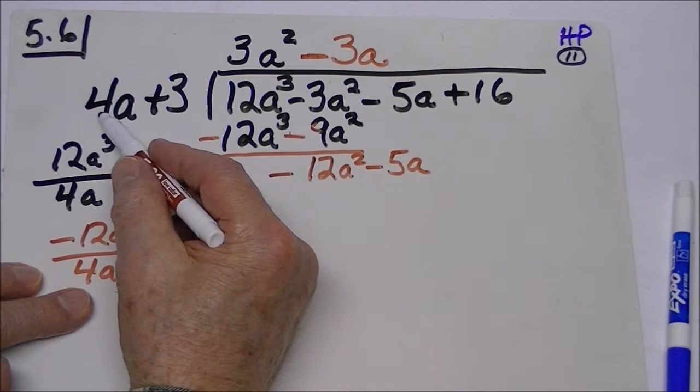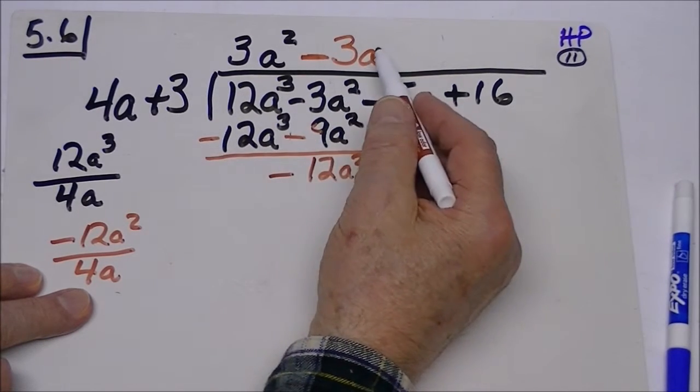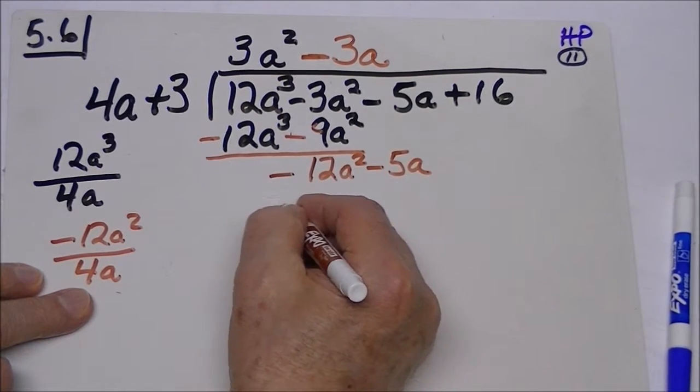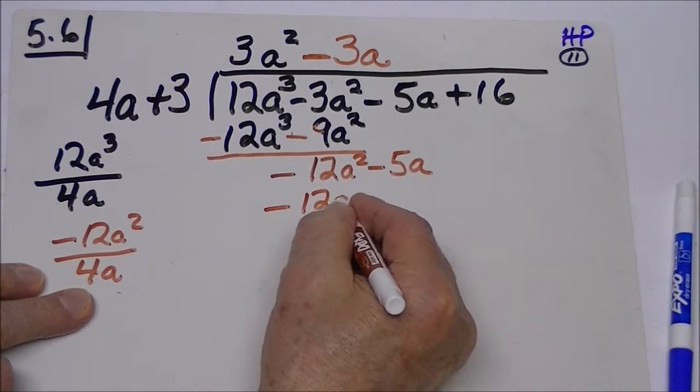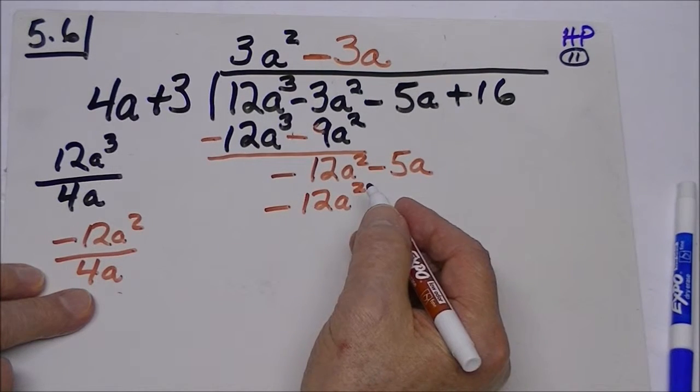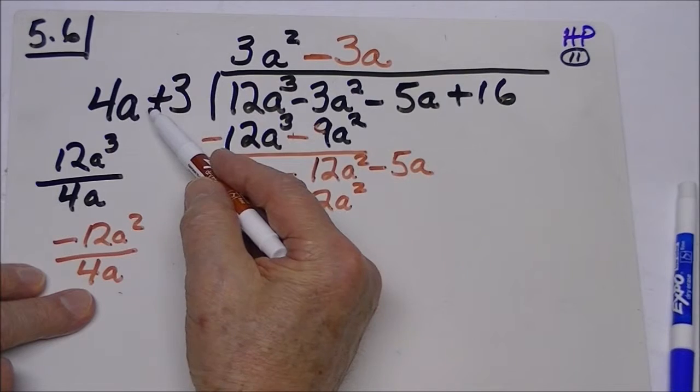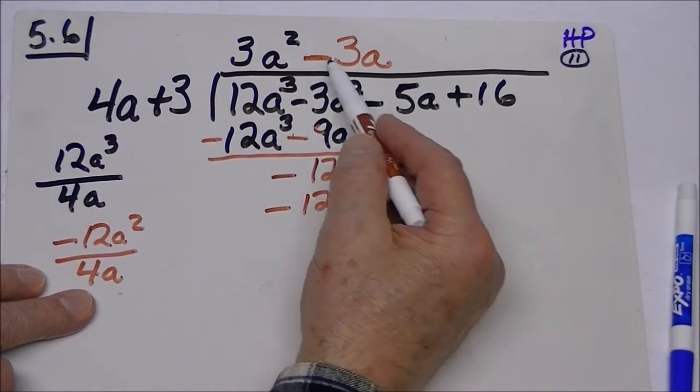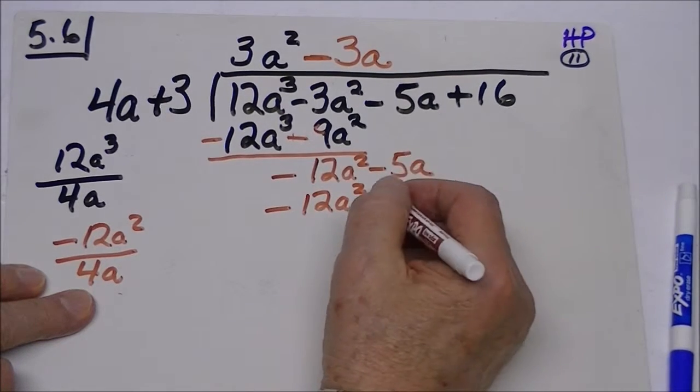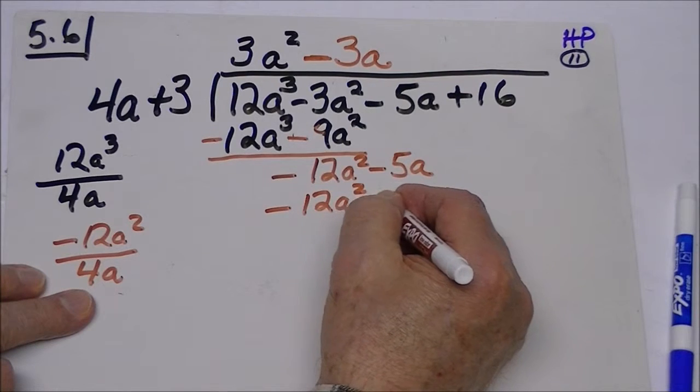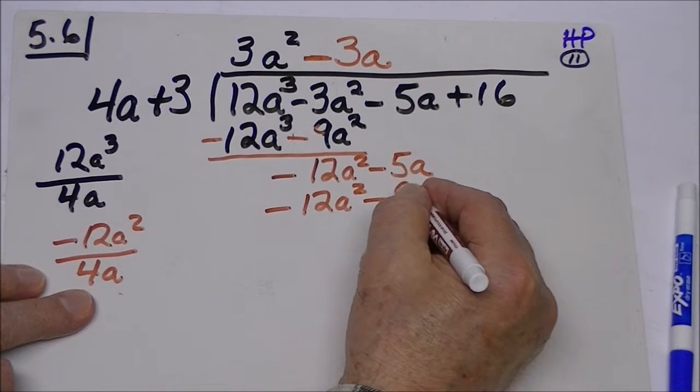So now that we multiply this times this, we get exactly this: 12a squared. Now we have to multiply our positive 3 times a negative 3a, and we get a negative 9a.